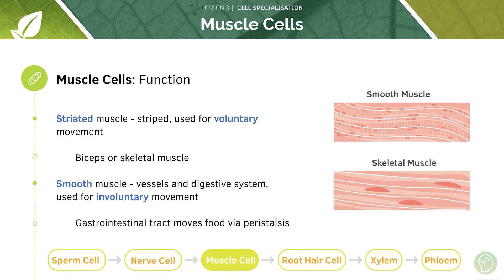Striated muscle is the muscle you usually think of — it's the muscle found in your biceps, for example, allowing you to move. Smooth muscle, in contrast, is found in some vessels and in your digestive system. Smooth muscle is controlled by subconscious processes, so you can't consciously cause your smooth muscle to contract — for example, this moves food through your gastrointestinal tract automatically.